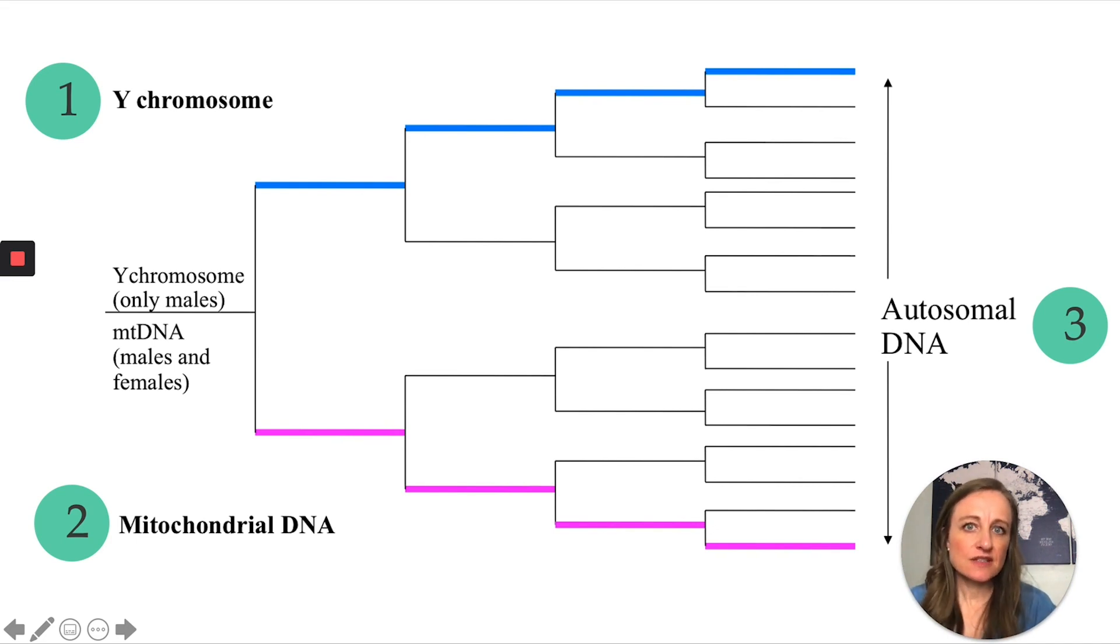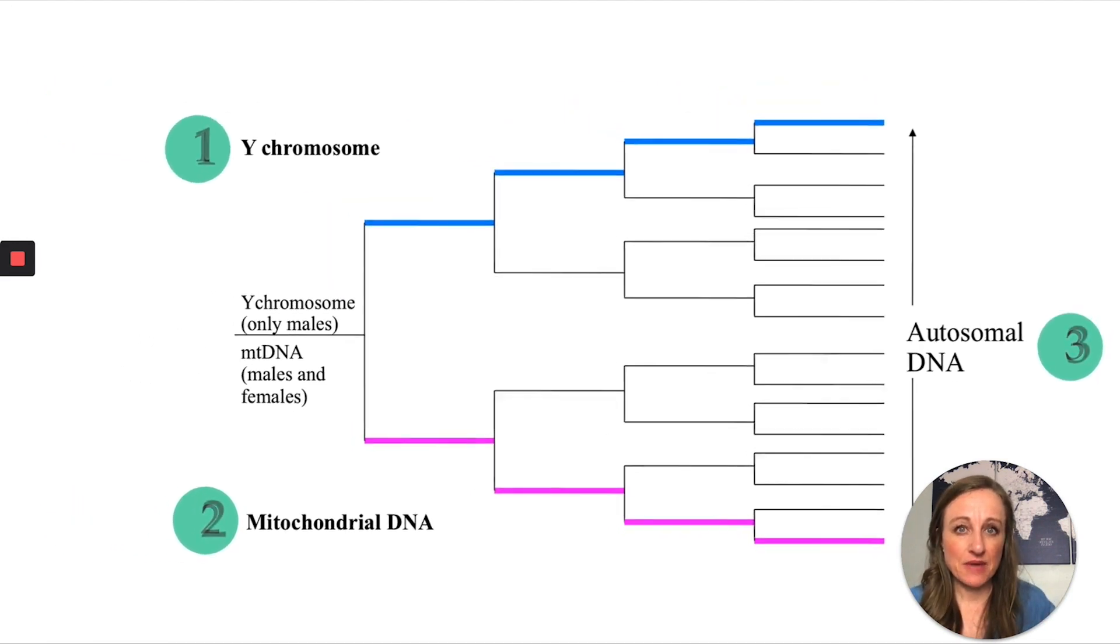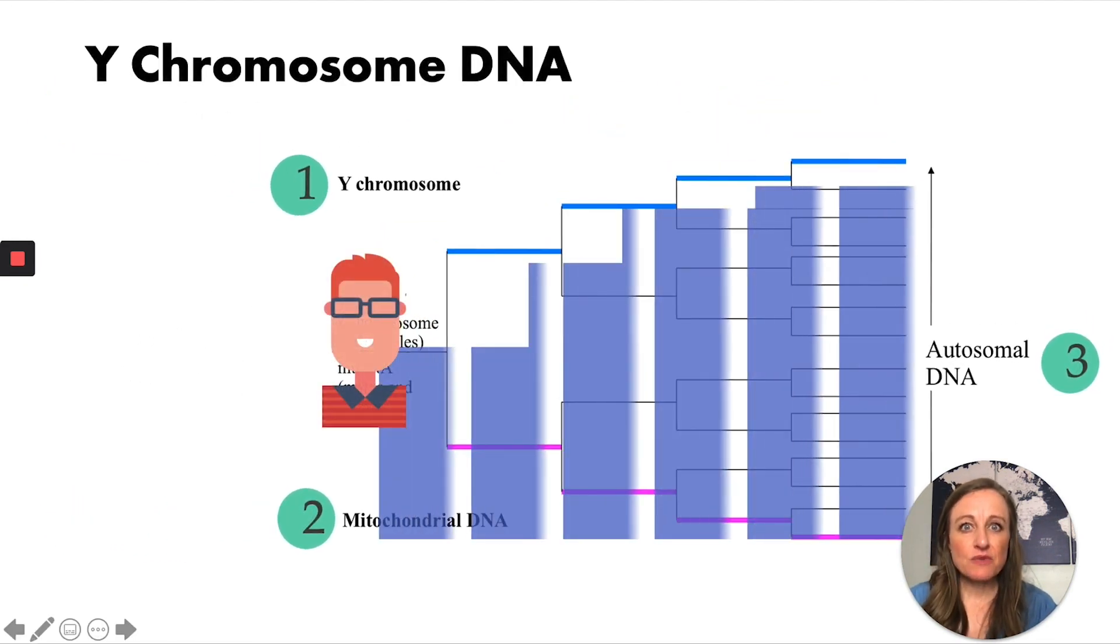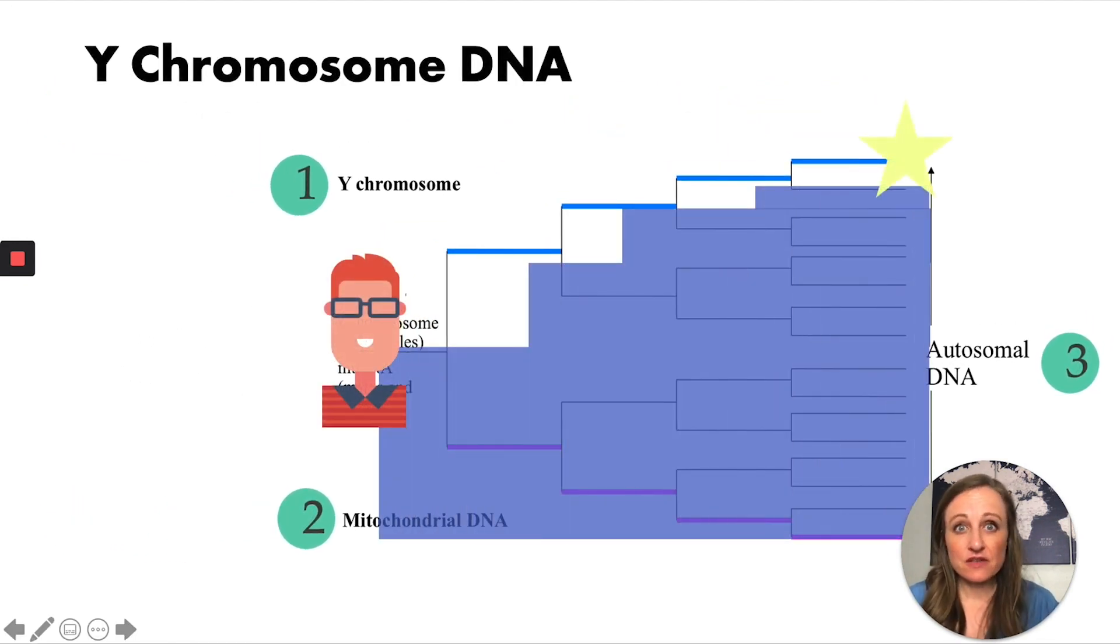All right, so when you're testing your Y-DNA, it means you're investigating only that direct male line. So that direct male line is your father's father's father's father's father. So just take one minute and think about who is that person? Who is that man that exists at the end of that line that you're trying to research?